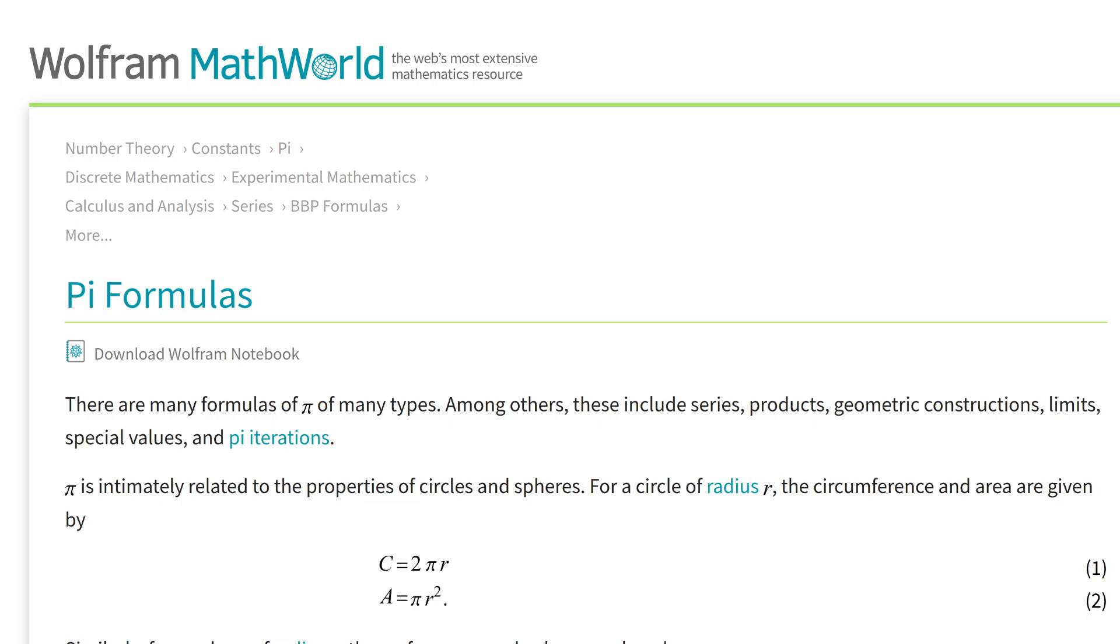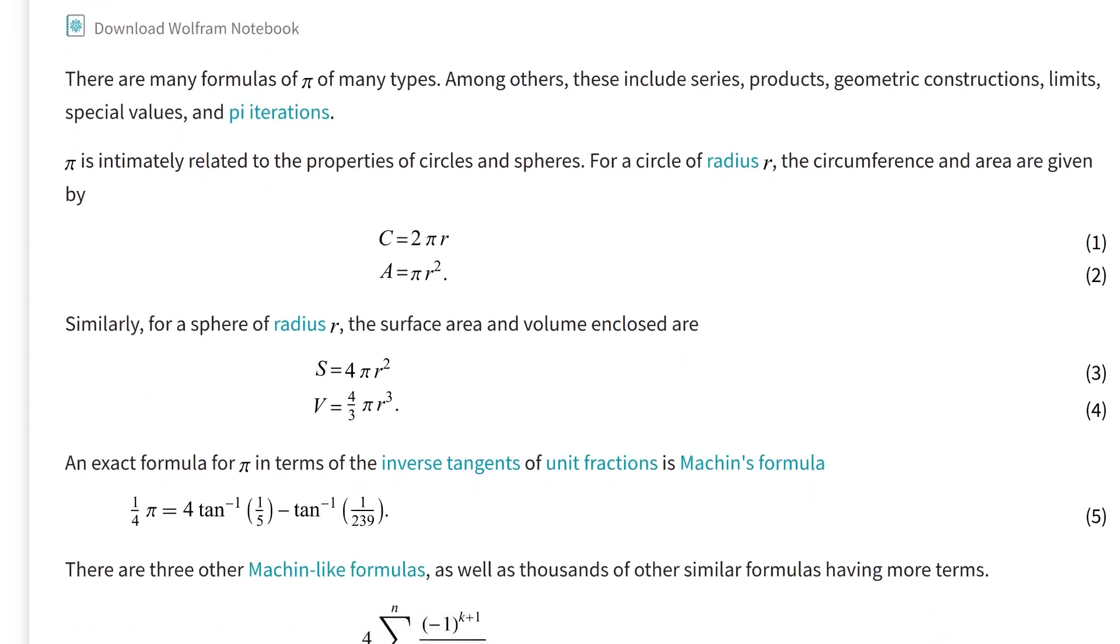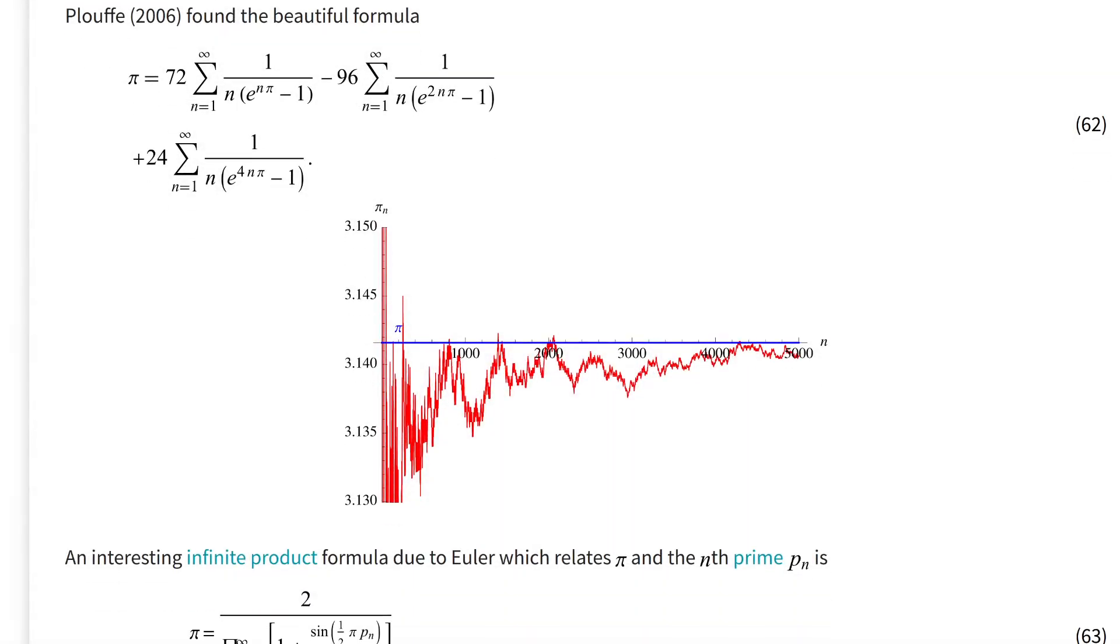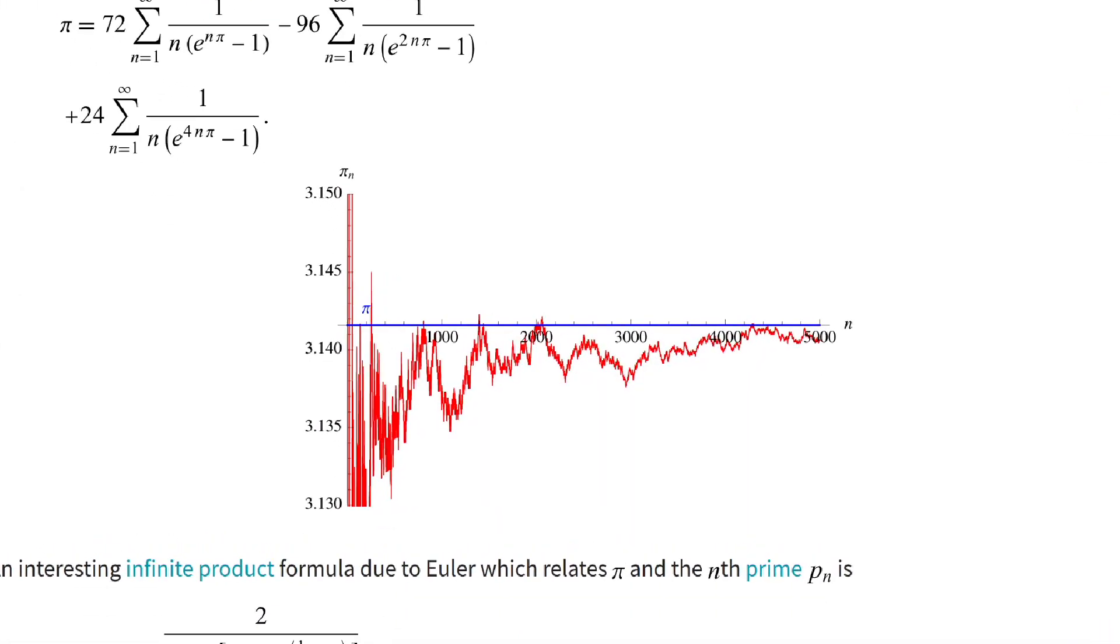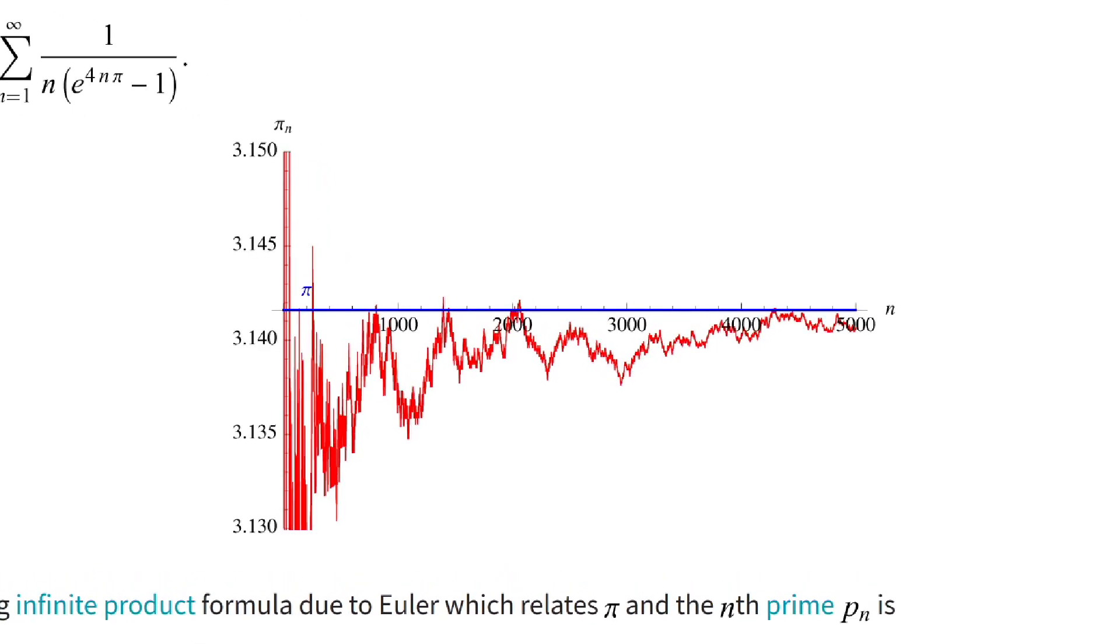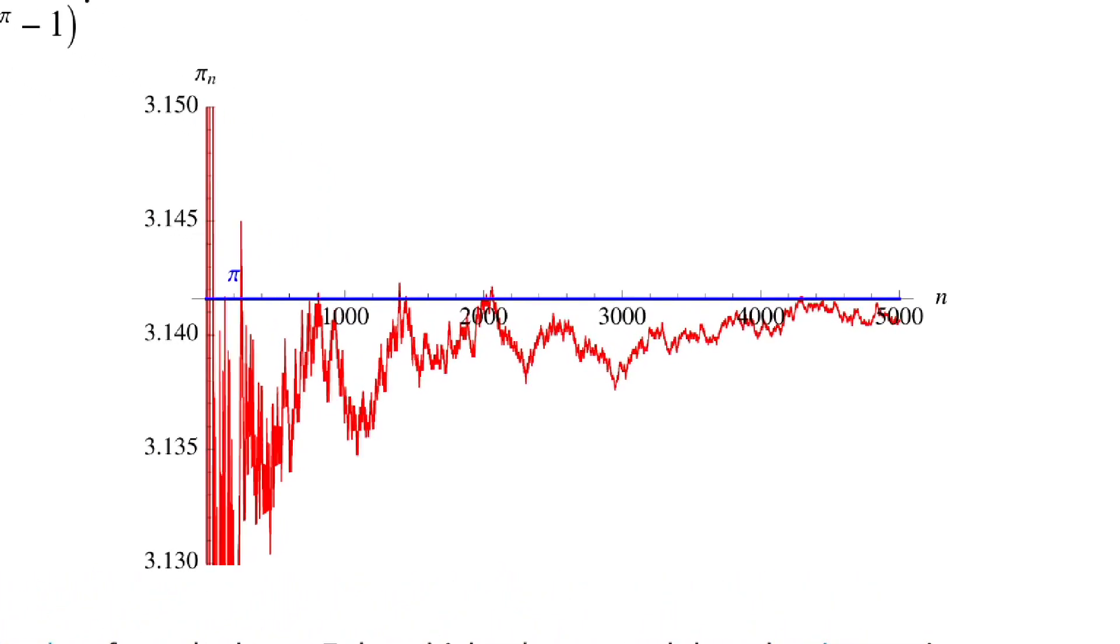There's a whole list of these sequences on Wolfram's math world. And scrolling down the page, I came across this exciting looking graph. It turns out to be an infinite product that converges to pi in a really odd meandering way.